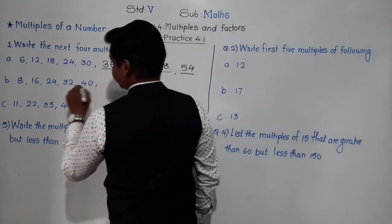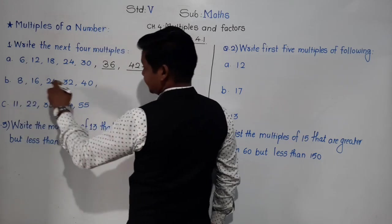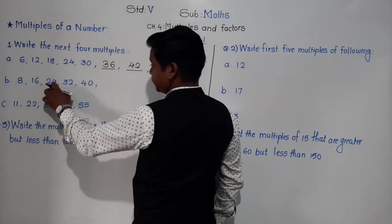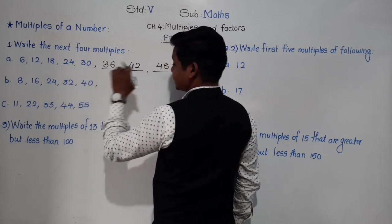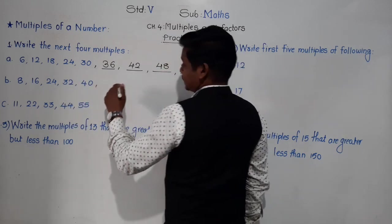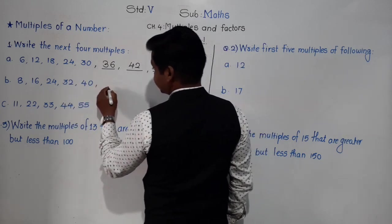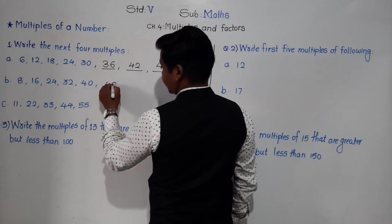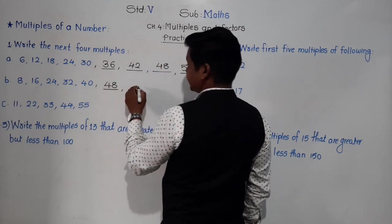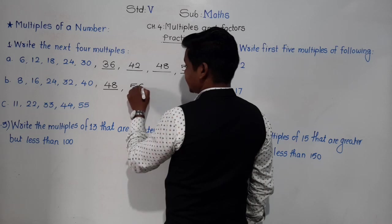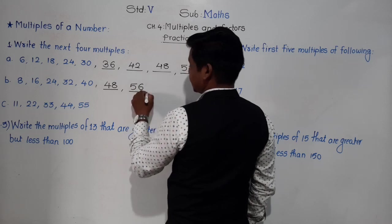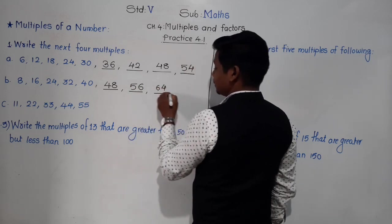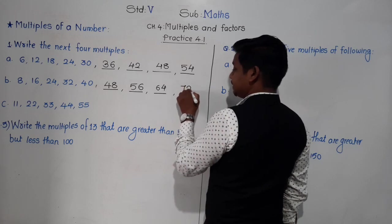For part B — the series for the table of 8: 8, 16, 24, 32, 40. The next multiple is 8×6=48, then 8×7=56, 8×8=64, and 8×9=72. These are the next 4 multiples in this series.